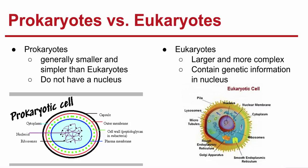Prokaryotes versus eukaryotes — there are two main broad categories of cells, depending on whether they contain or do not contain a nucleus. A nucleus is a large membrane-enclosed structure that contains the cell's genetic information in the form of DNA, and it controls many of the cell's activities. Prokaryotes are generally smaller and simpler than eukaryotic cells. They have genetic material, but it's not stored in the nucleus — it is stored in the center of the cell, called the nucleoid. Some examples of prokaryotes are bacteria. They still grow, reproduce, and respond to environments; they're just much simpler than eukaryotic cells.